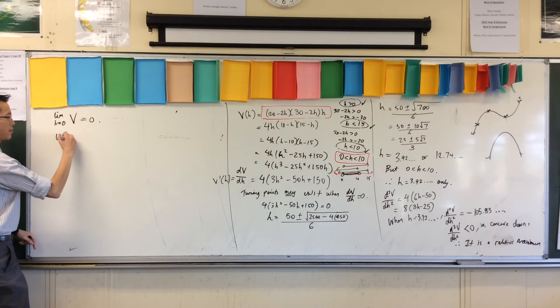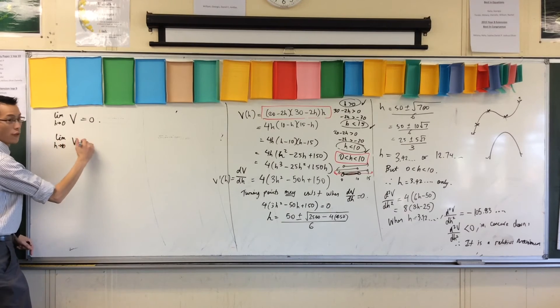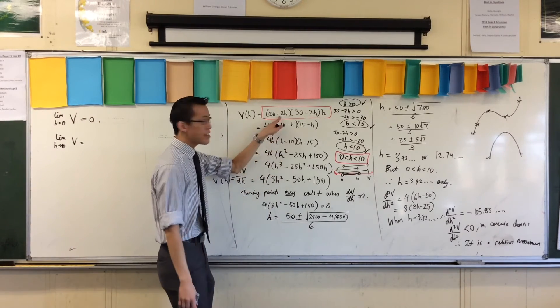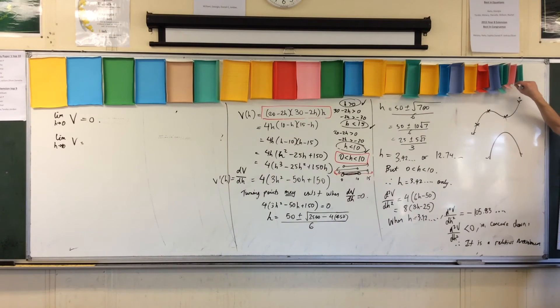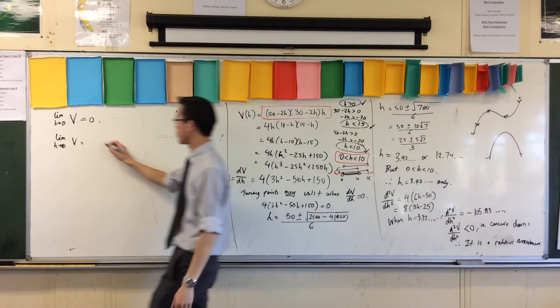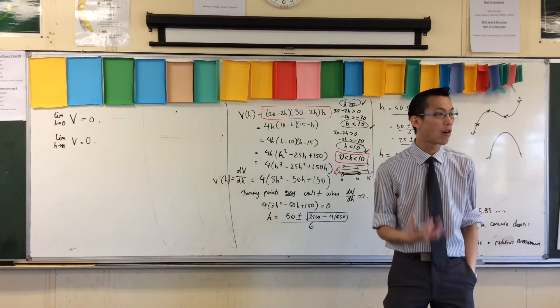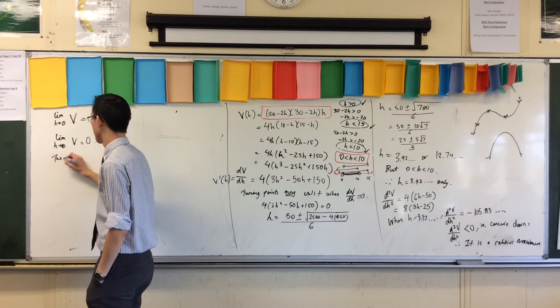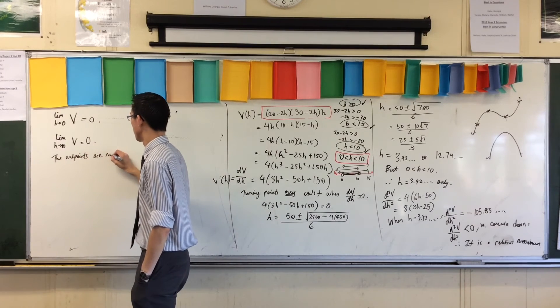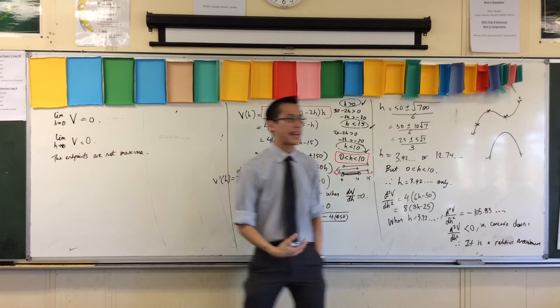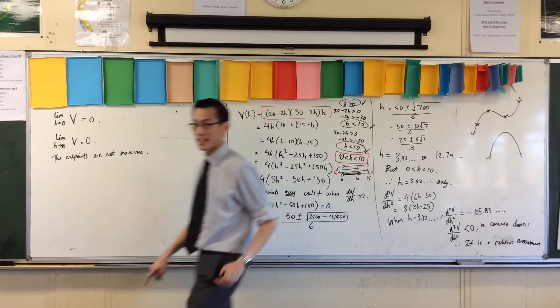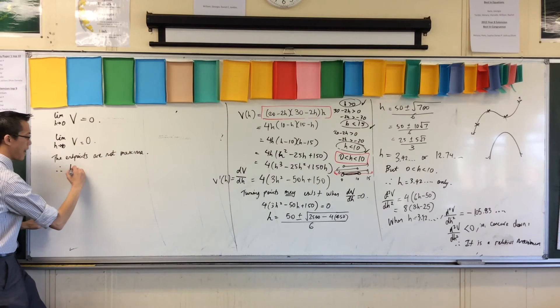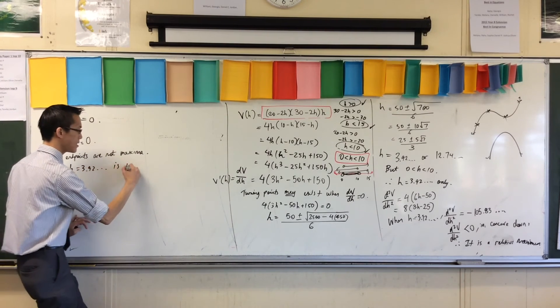In the same way, the limit as H approaches 10 of the volume. Well, have a look at what happens as you get to 10. Again, this guy is going to approach 0. This guy won't, but this guy will, which, in fact, corresponds to this length here. It approaches 0. So, therefore, it also is 0. So, neither of those, the endpoints, are not going to give me maxima. They cannot possibly be maxima, because they're 0, and this is going to give me, this is concave down. Therefore, I can say, all right, fantastic. I actually have an answer now. Therefore, H equals 3.92 dot dot dot is the absolute maximum.